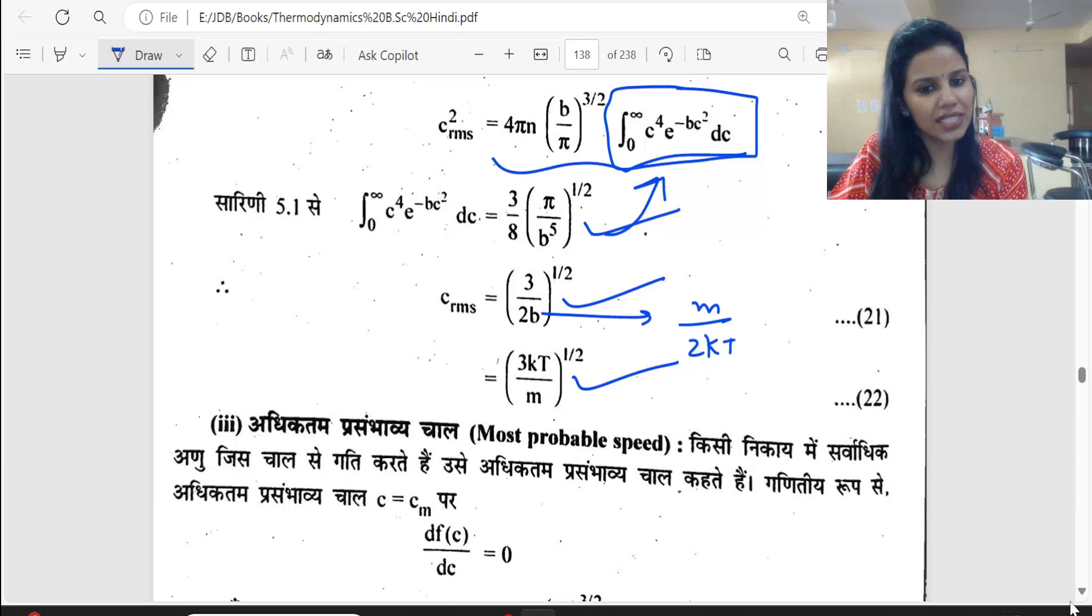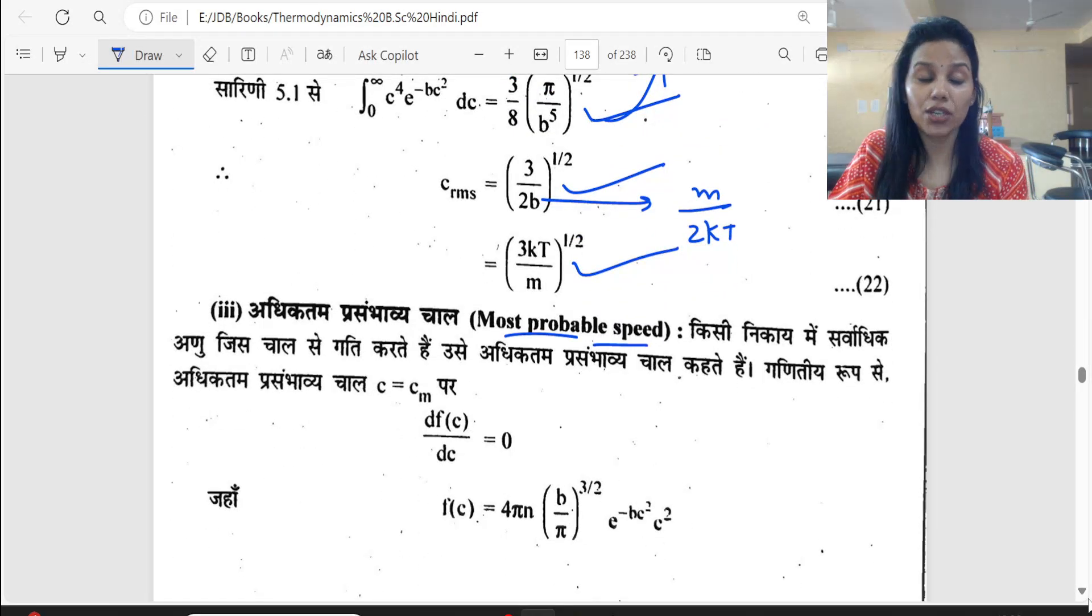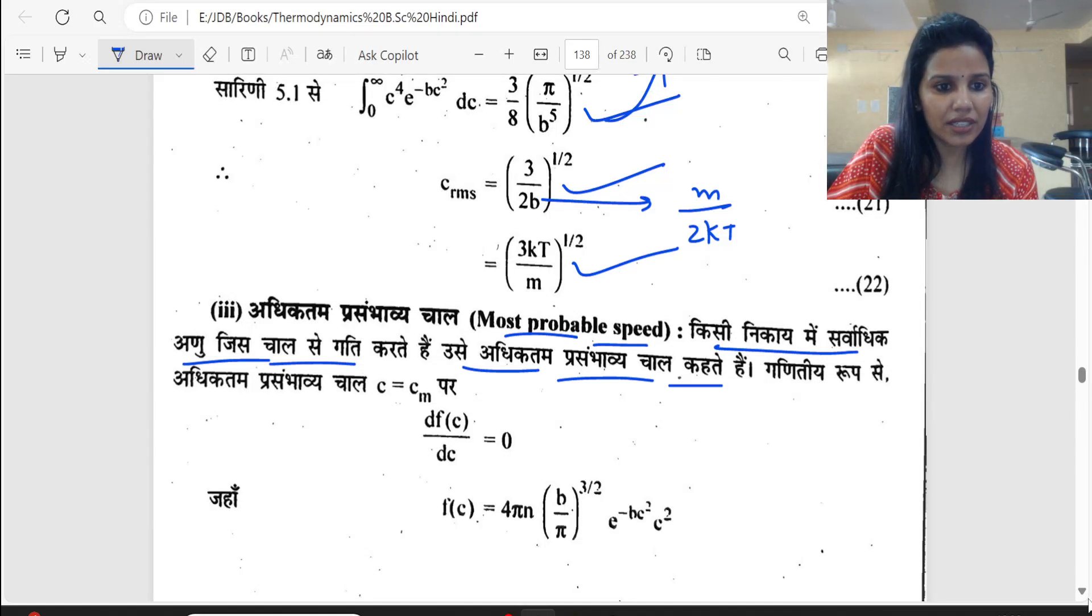This is the most probable speed. In any case, the most probable speed is the speed at which maximum number of particles are found. If it is 10, then 8, which we call the most probable speed.